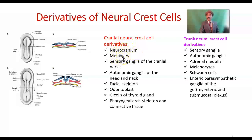From the cranial neural crest cells, which go to the head and neck, we get: neurocranium, meninges, pia mater, arachnoid mater, sensory ganglia of the cranial nerves (like the ganglion of the trigeminal nerve), autonomic ganglia of the head and neck (like parasympathetic and sympathetic ganglia — otic ganglion, submandibular ganglion, pterygopalatine ganglion, ciliary ganglion), facial skeleton, odontoblasts that form the dentine of the teeth, C cells of the thyroid gland (also called parafollicular cells), and contribution to pharyngeal arch skeleton and connective tissue.